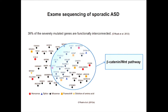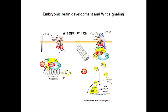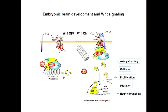Recently, a series of exome sequencing studies of sporadic autism spectrum disorder have been reported, where researchers look for changes in the protein-coding region of genes. This was done by major groups such as Evan Eichler and Mark Daly. They discovered that many of the severely mutated genes converge to a common functional pathway, and one that was prominent was the beta-catenin-mediated Wnt pathway. When Wnt protein binds to its receptor, beta-catenin — a key mediator of this process — can be saved from degradation and enters the nucleus, activating the transcription of many Wnt target genes important for axis patterning, proliferation, migration, and neurite branching.